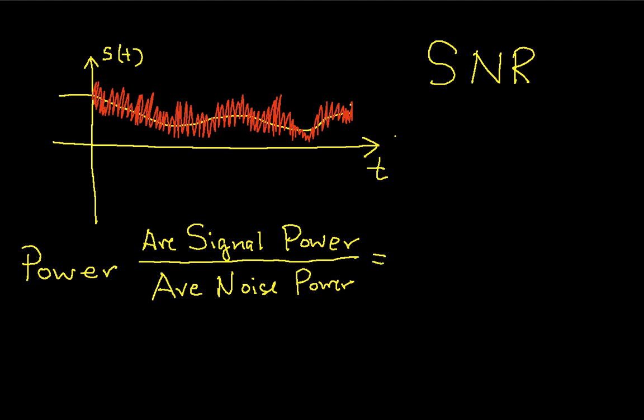Typically, we'll give the average signal power the symbol S, and the average noise power the symbol N. So you can represent that as S over N.